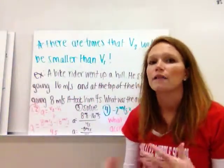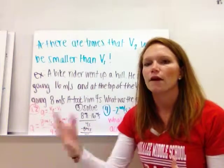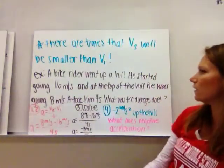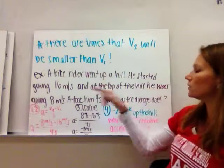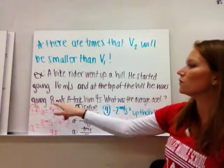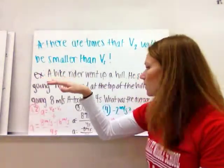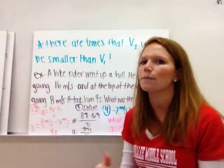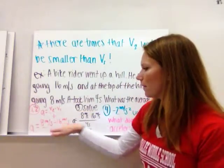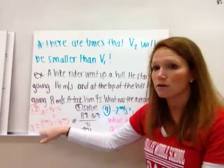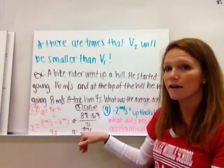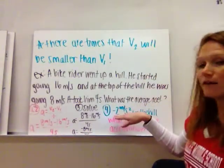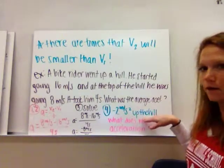There are going to be times that V2 was smaller than V1, or that the speed or velocity decreased. For example, a bike rider went up a hill. He started going 16 meters per second, and at the top of the hill he was going 8 meters per second — so he slowed down as he rode up the hill. It took him 4 seconds. What was the average acceleration? Following the same steps, you plug in the information. You see that V2 is smaller than V1, so you end up with a negative number on top — that's okay. When you solve and write it with your units, you'd have negative 2 meters per second squared up the hill. Remember to include the direction.